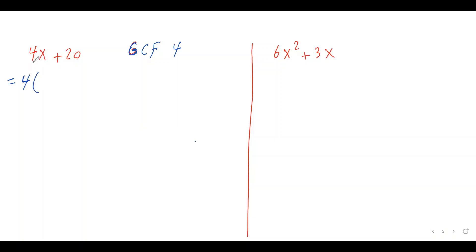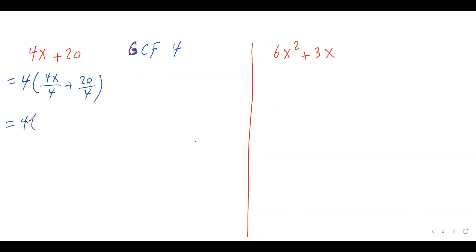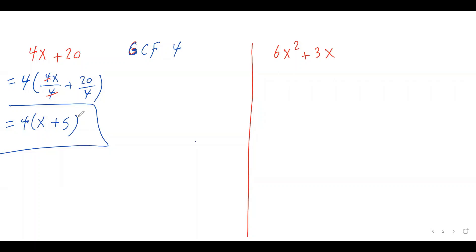The second thing we need to do is divide each term by that greatest common factor. So 4x divided by 4, and then the second term: plus 20 divided by 4. Now let's simplify the bracket. 4x divided by 4 — the 4s cancel — so I have x. Plus 20 over 4, which is 5. So I have 4 times open bracket x plus 5.